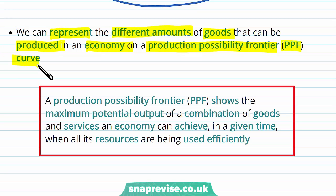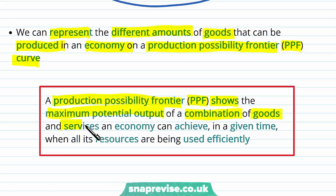Sometimes you see it as a PPC, which is a production possibility curve, and sometimes you just see it as a PPF curve. The definition: a production possibility frontier or PPF shows the maximum potential output of a combination of goods and services in an economy, which can be achieved in a given amount of time when all its resources are being used efficiently.